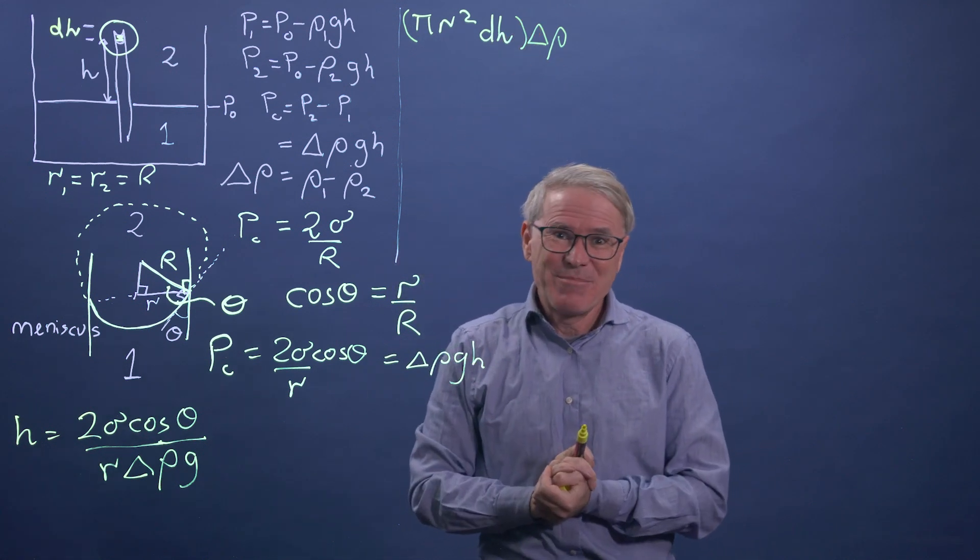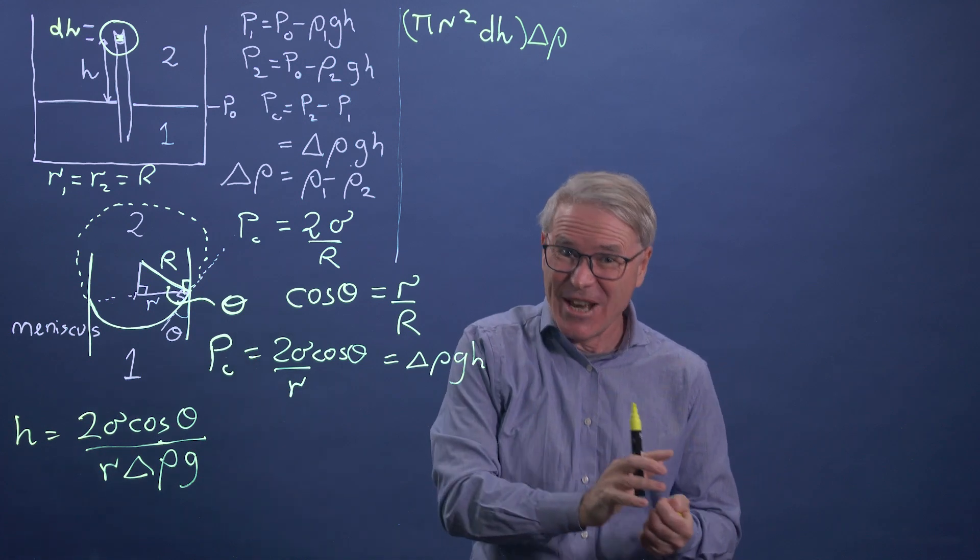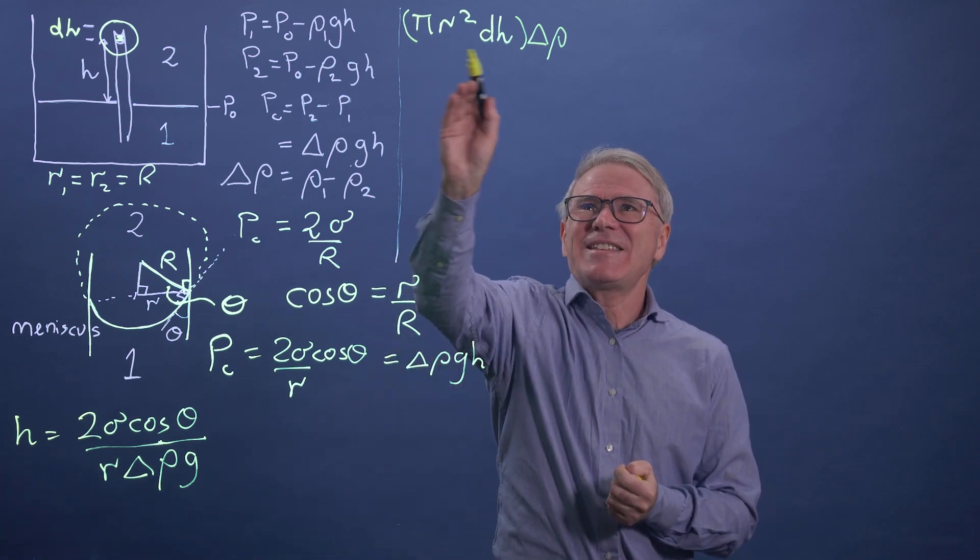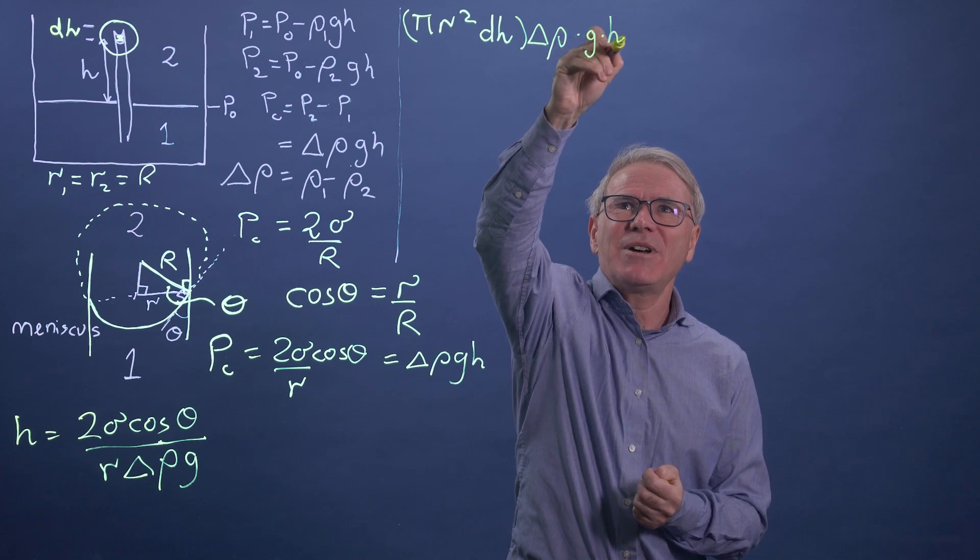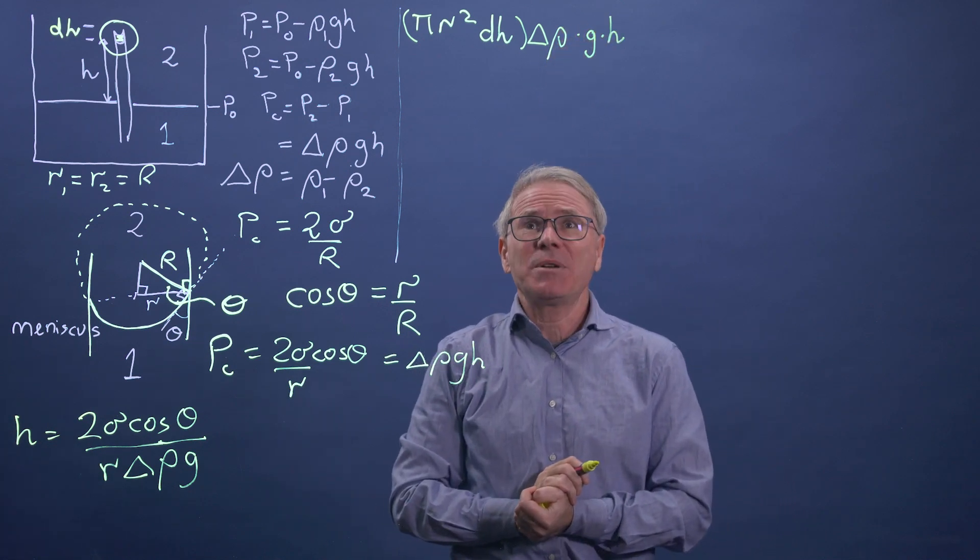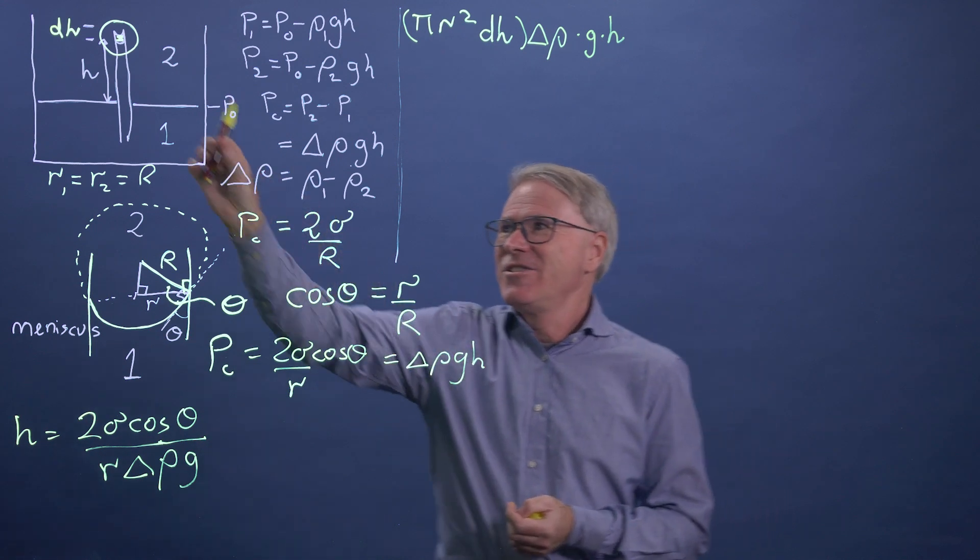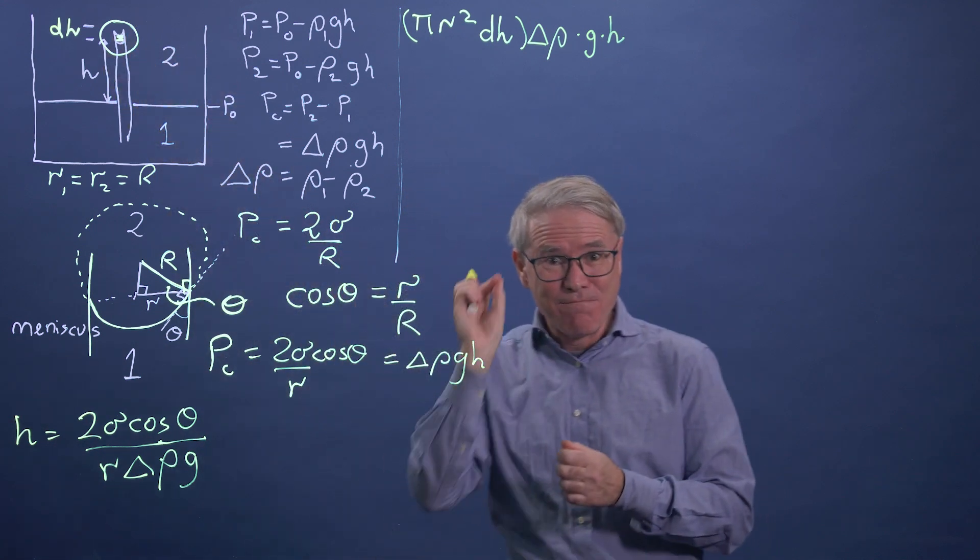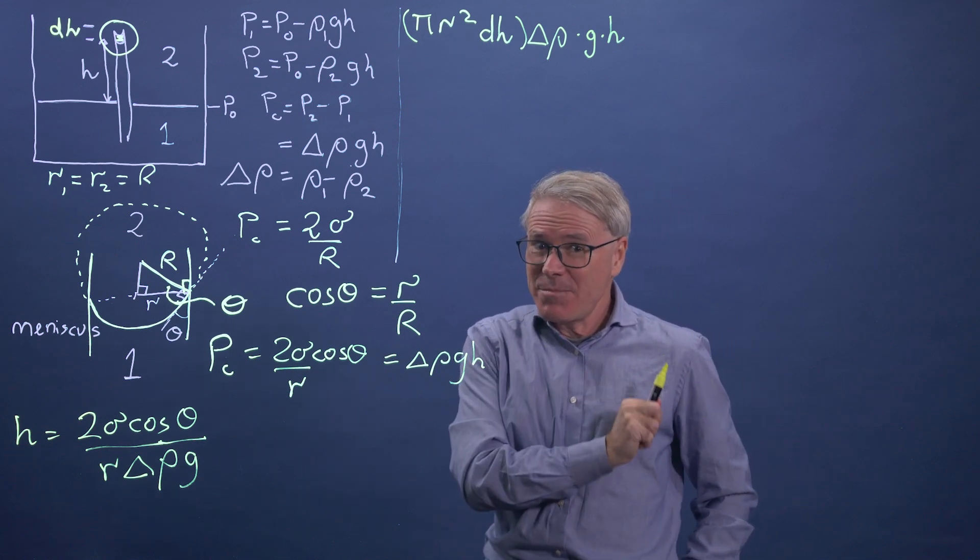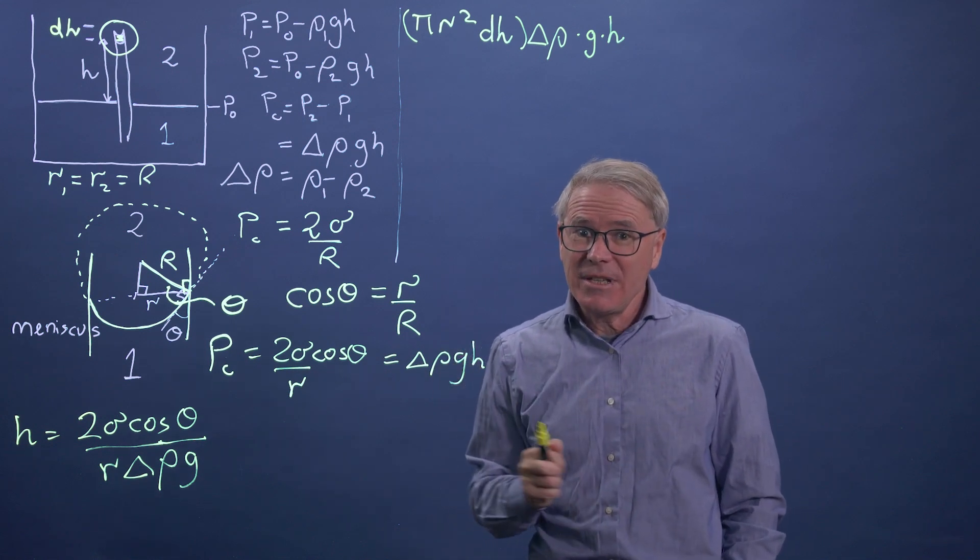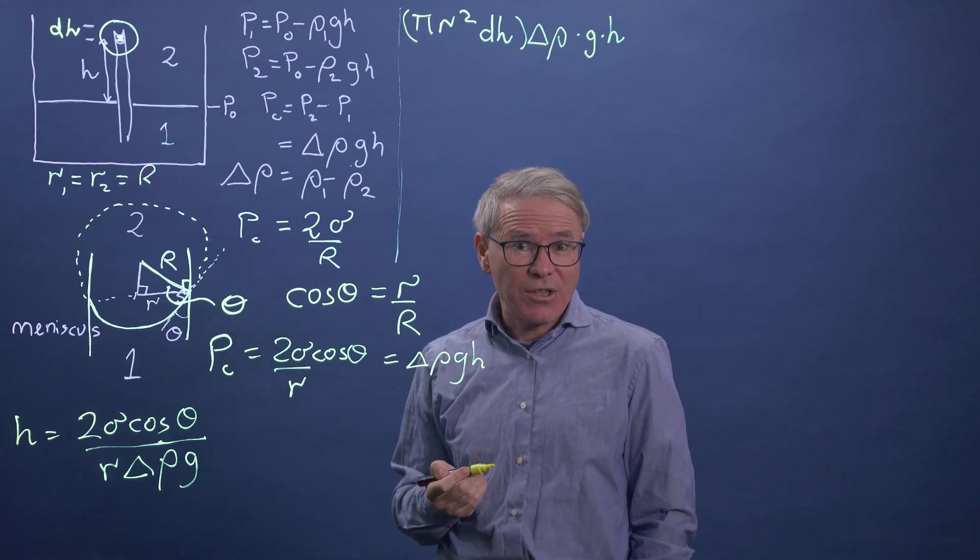And then we know potential energy is mgh, isn't it? So that's the mass times g times height. That's your potential energy. That's the potential energy that you have to add to move that water up. So that's not favorable. But it has to be balanced by something that is favorable, which is the change in surface energy.